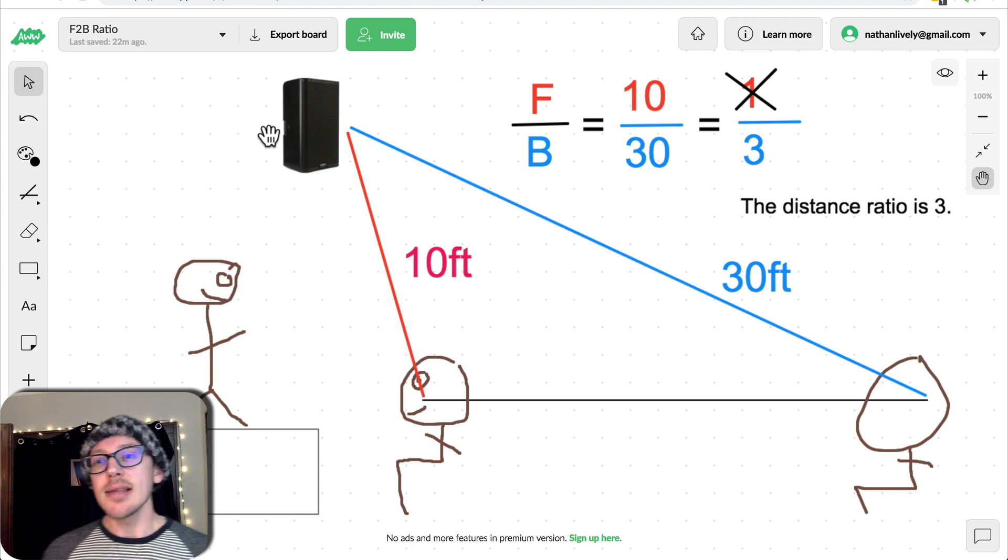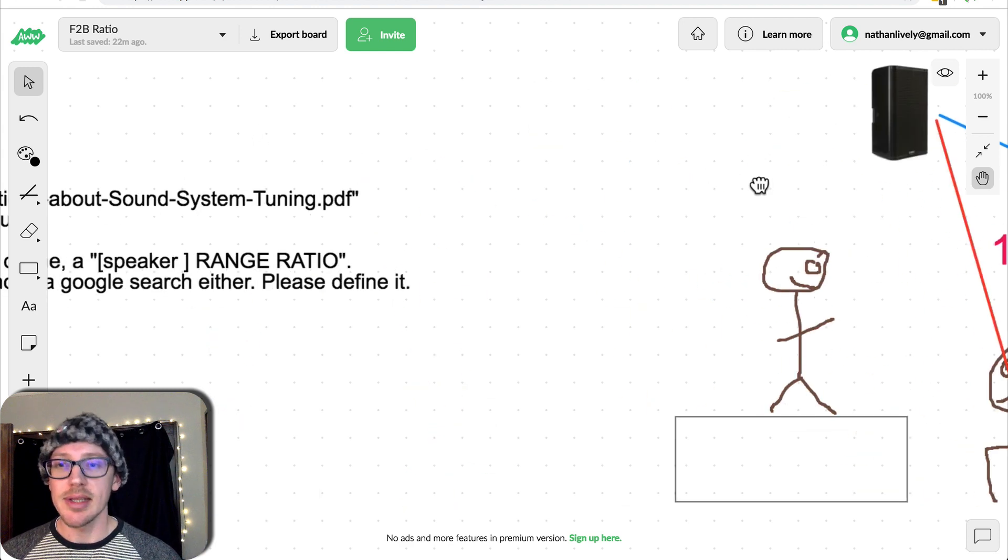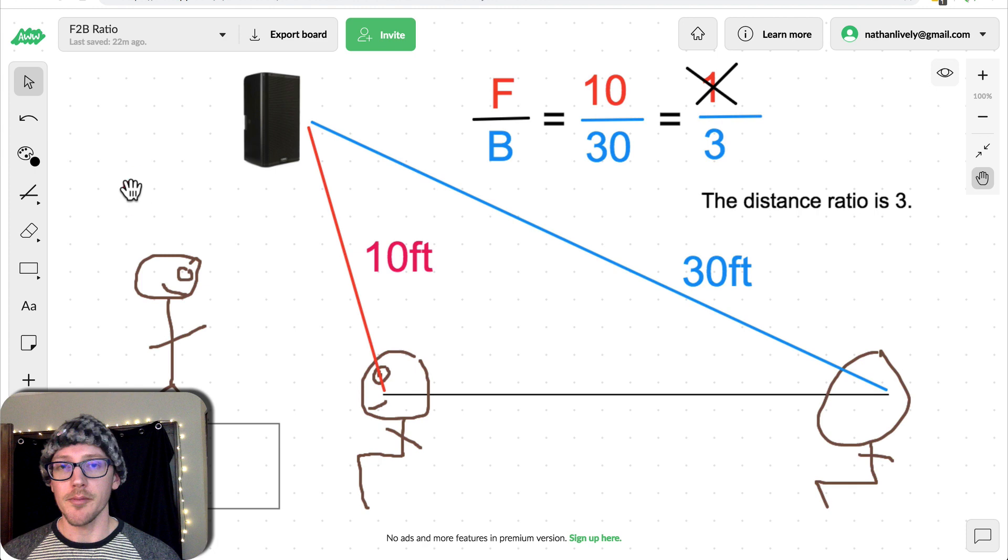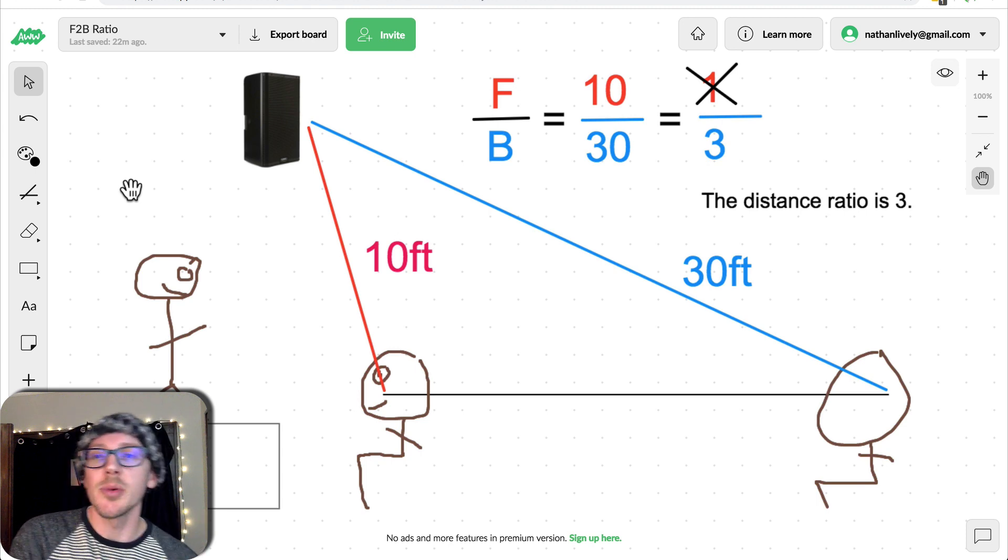So when I say distance ratio, I think that's what you asked. No, range ratio. When I say range ratio, that's interchangeable with distance ratio for me, and I usually use front-to-back ratio interchangeable with that.